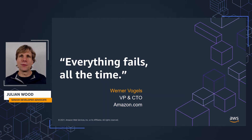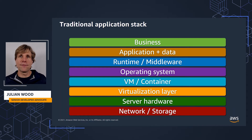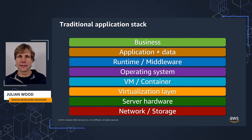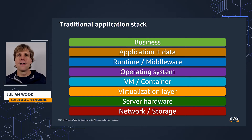We must assume we will need to deal with failures, and often exactly when you don't want them to happen. Looking at a traditional application stack, there were a whole number of layers you had to monitor or do observability for yourself — from the network, storage, physical server hardware, all the way up through many abstraction layers of virtualization and operating systems to your application itself and also business outcomes. I've spent 25 years as an infrastructure engineer setting up monitoring and alerting for many of these components across the many layers.